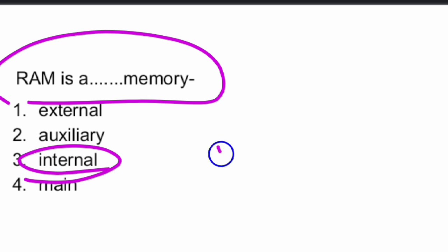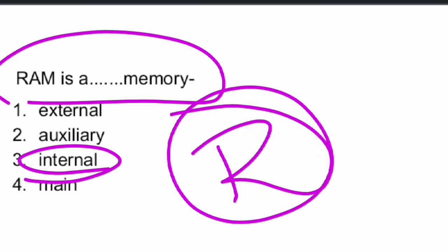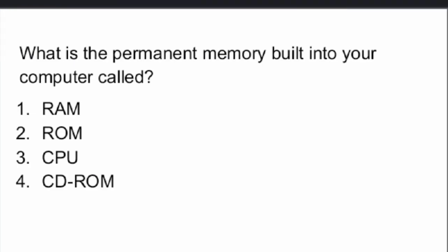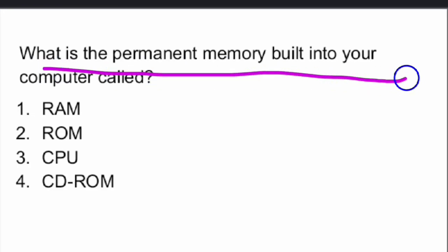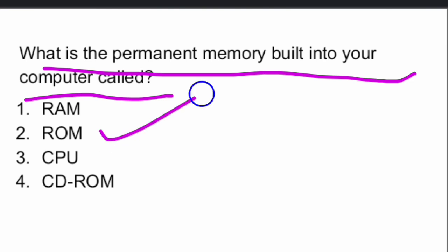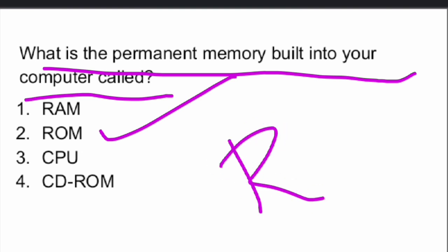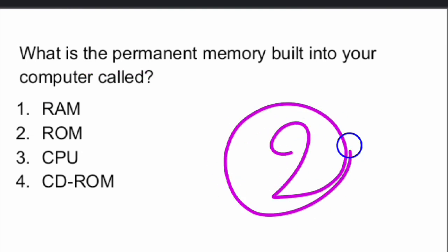RAM, or Random Access Memory, is an internal memory. What is the permanent memory built into the computer called? It is ROM — Read Only Memory — and that is option two, the right answer.